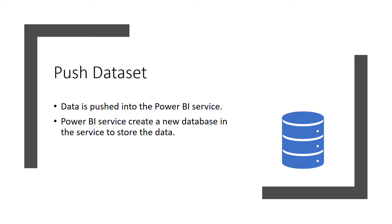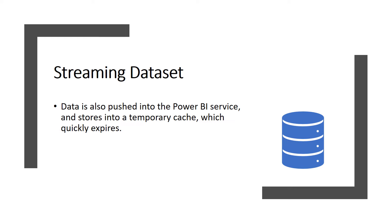With a push dataset, data is pushed into the Power BI service. When the dataset is created, the Power BI service automatically creates a new database in the service to store the data. Power BI only stores data into a temporary cache which quickly expires — the data will clear itself after an hour. Streaming datasets are optimized for quickly displaying real-time data.